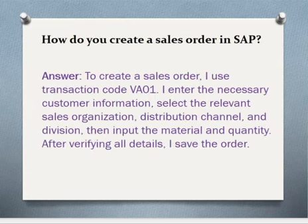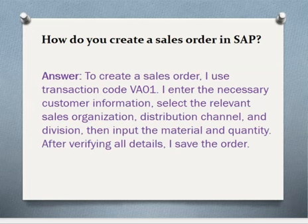How do you create a sales order in SAP? To create a sales order, I use transaction code VA01. I enter the necessary customer information, select the relevant sales organization, distribution channel and division. Then I input the material and quantity. After verifying all details, I save the order.